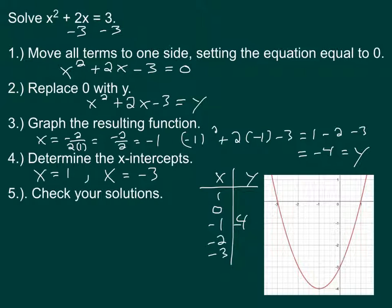We can check them by plugging them into our original problem. I'll first start by plugging in 1. 1 squared plus 2 times 1, that should equal 3. That's 1 plus 2 equals 3. That one certainly works.